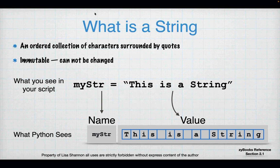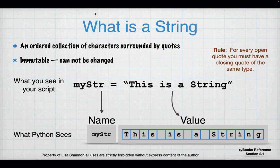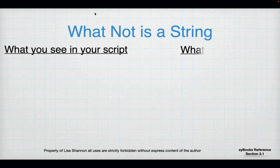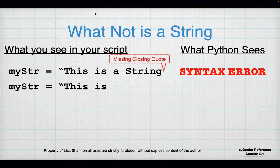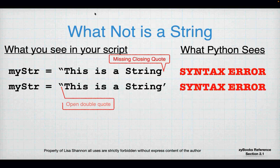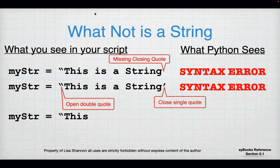For every open quote you have to have a closing quote of the same type. Sometimes this gets people because they'll put an open double quote and then forget a closing quote, or use a closing single quote — the quotes aren't balanced. When that happens, Python is going to give you a syntax error. An opening quote without a closing quote, or mismatched quote types, are not valid strings.